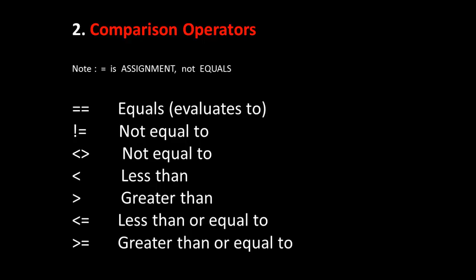With that out of the way, there's also not equal to, which is the exclamation point, the logical not, and equal to. You can also use the less than and greater than symbol to say not equal to. And then of course you have less than, greater than, less than or equal to, and greater than or equal to.